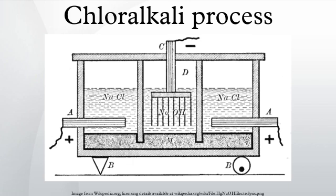Because of the corrosive nature of chlorine production, the anode must be made from a non-reactive metal such as titanium, whereas the cathode can be made from a more easily oxidized metal such as nickel. In the membrane cell, the anode and cathode are separated by an ion-permeable membrane.